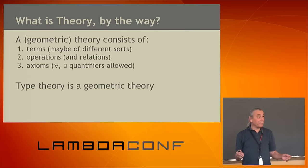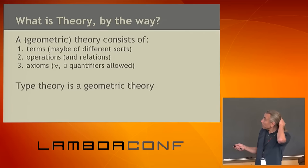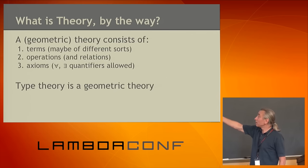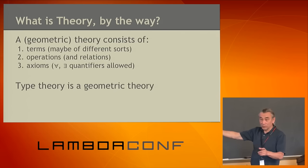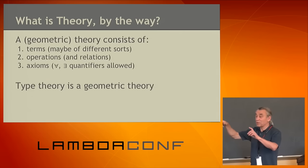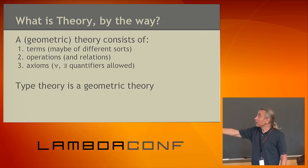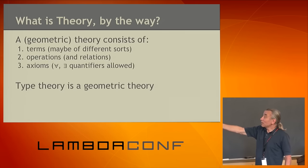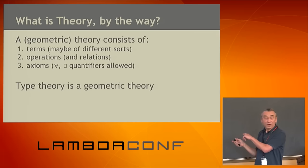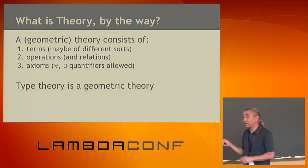What is a theory? In model theory, we have terms — which could be variables or built out of functional symbols — we have operations that may be relations, and we have axioms describing the interrelationship between terms or values. Those axioms can have two quantifiers: universal and existential. A geometric theory is geometric if it has the existential quantifier. I'm not going deep into model theory, just reminding you what a theory is.